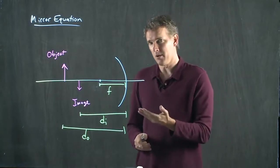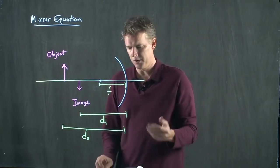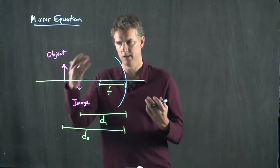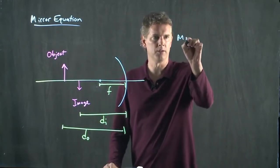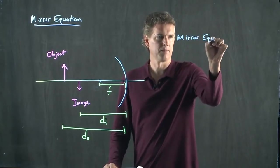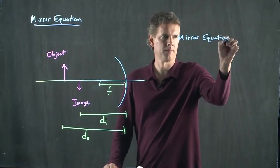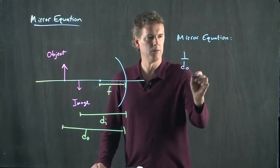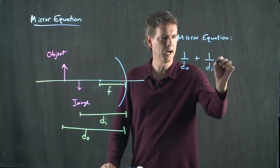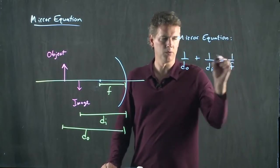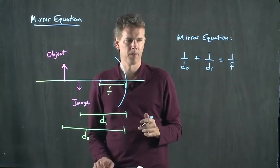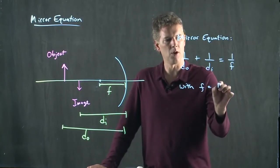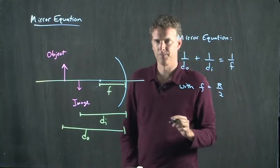So the mirror equation allows us to determine where that image is going to be located. And the mirror equation is the following: 1 over DO plus 1 over DI equals 1 over F. And remember that F was equal to R over 2.